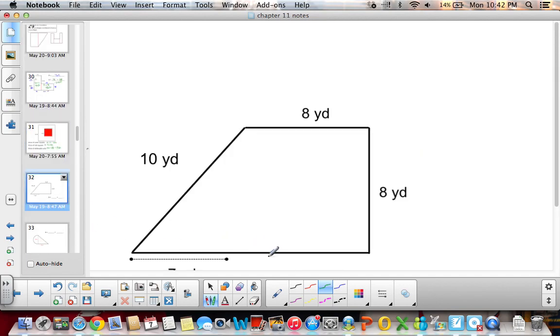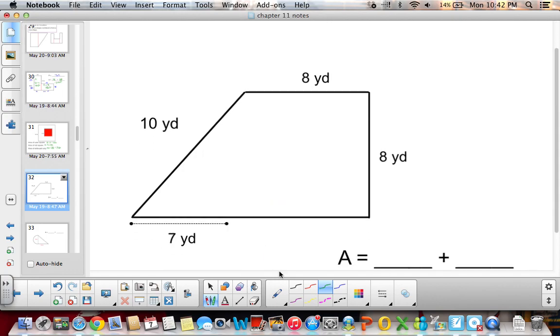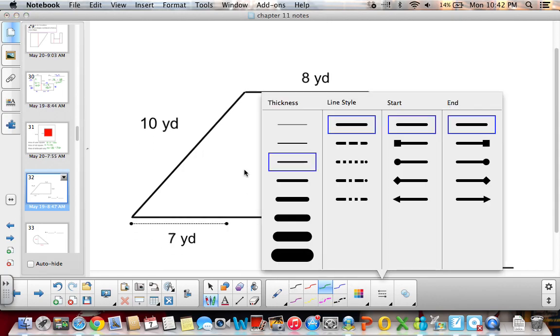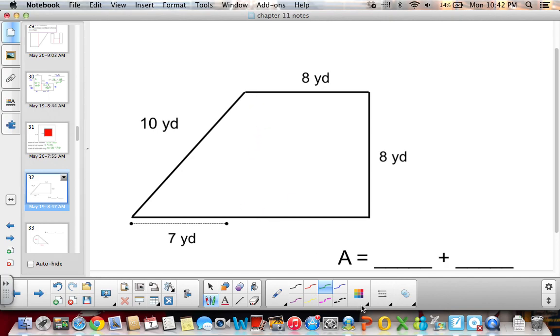Okay, here we are given a trapezoid, but we can also break this up into a triangle and a square. So I'm going to draw a line right here, and now I know that I have a square. The area of this square is going to be 8 times 8, which is 64 yards squared. I also know that because it's a square, this height is 8 yards.